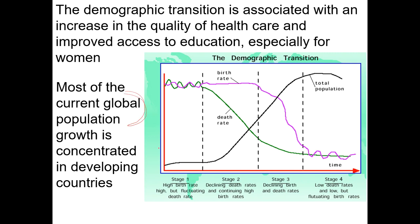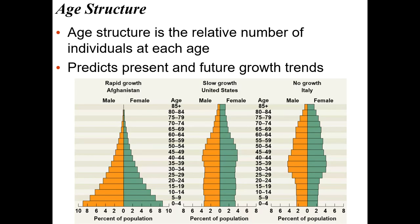Most of the current population growth is concentrated in developing countries, because they're at this middle stage of the demographic transition, whereas societies that have been industrialized for quite a while are at the end stage with fairly flat population growth.